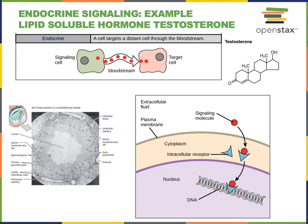An example of a lipid soluble hormone is testosterone. Testosterone is produced by cells inside of the male gonads, also known as the testes, specifically by interstitial cells of Leydig. Testosterone travels through the bloodstream and binds to intracellular receptors within target cells. Because testosterone is lipid soluble, it is able to cross the plasma membrane and enter the cell to bind to an intracellular receptor. The intracellular receptor-hormone complex then functions as the intracellular signal that will regulate gene expression, turning on and off the transcription of different genes.